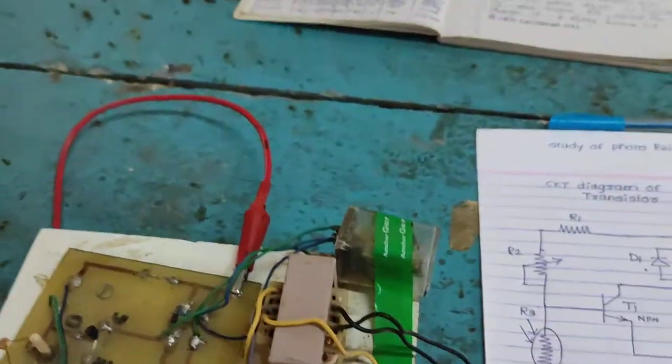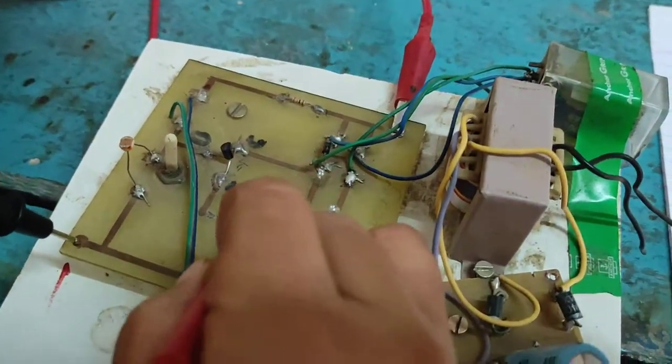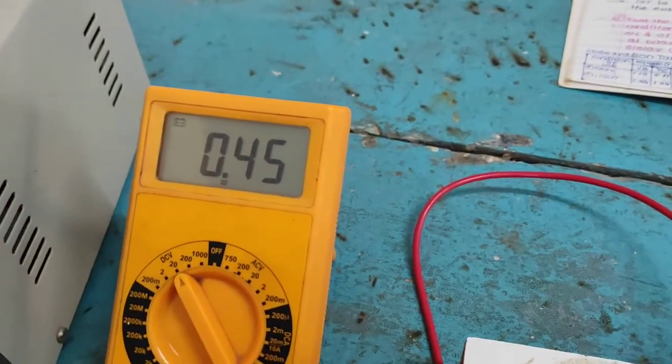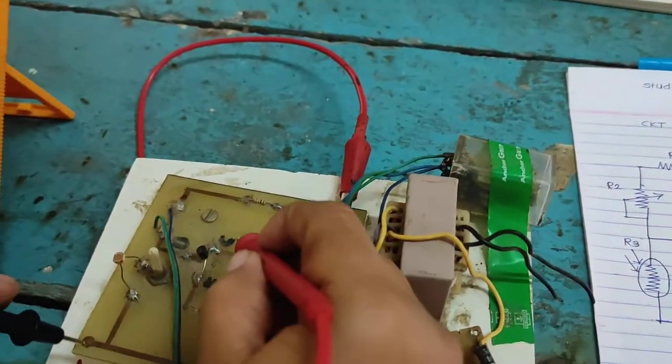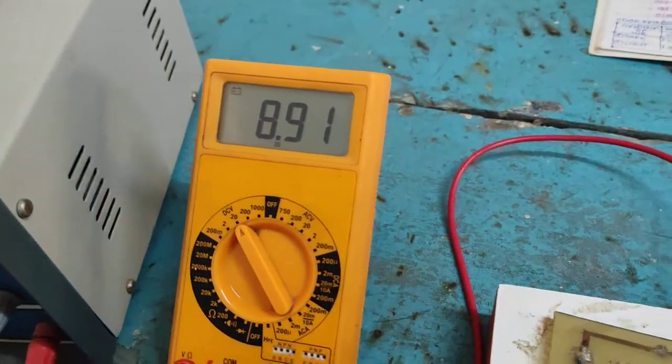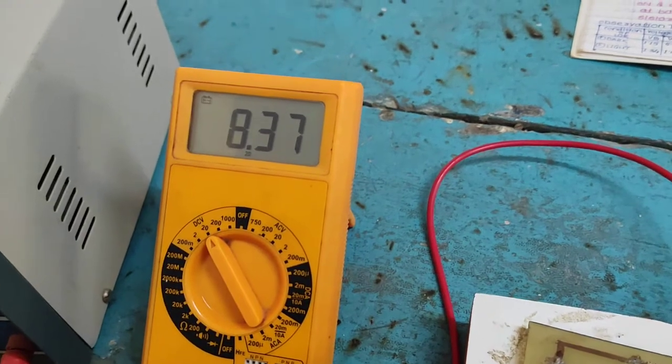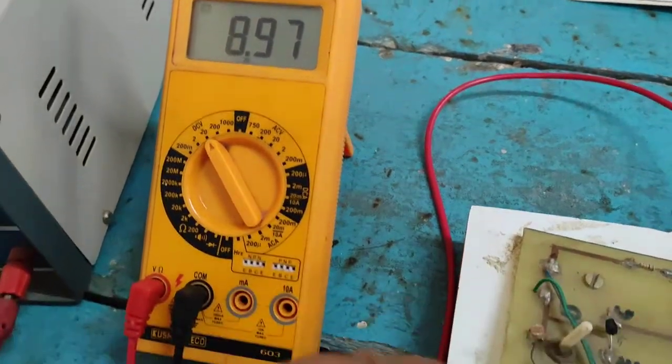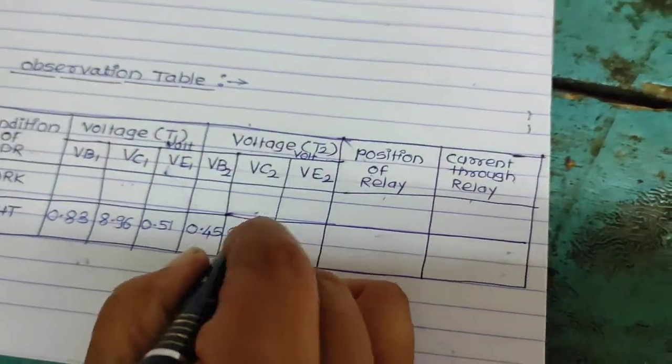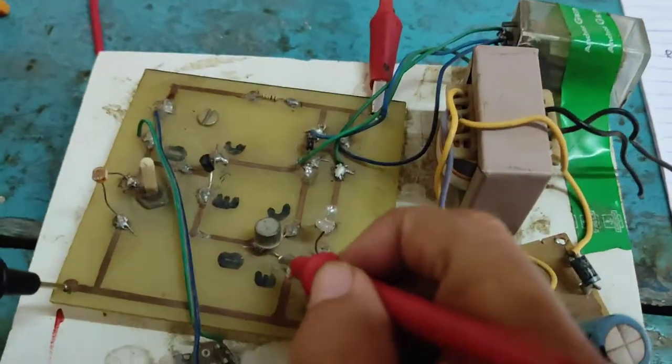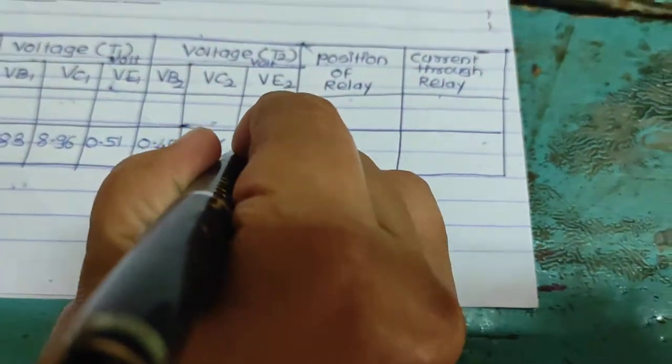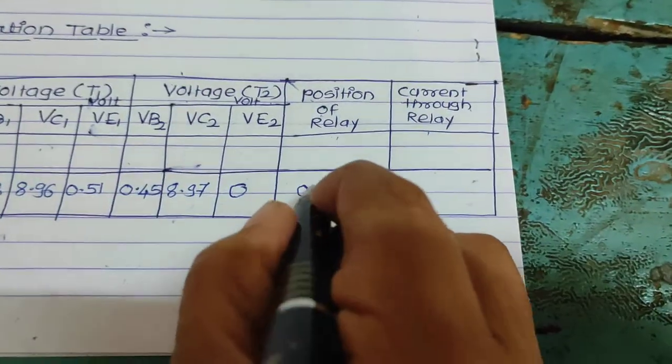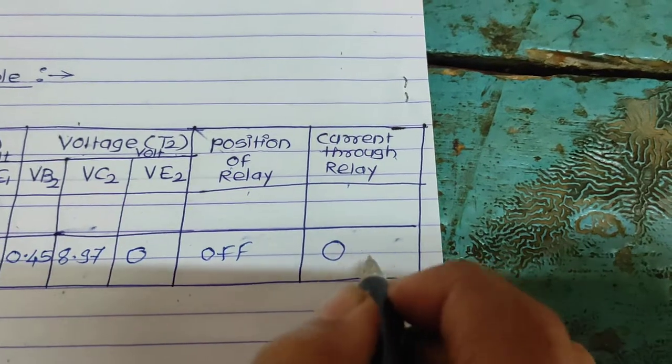Then voltage across T2, VB2 0.45. VC2 8.97 volt. Voltage across T2, VE2 0. Then position of relay is off. Then the current through relay is 0 milliampere.